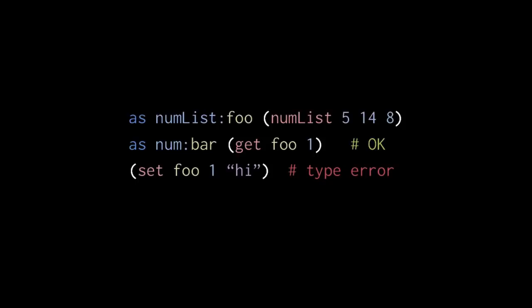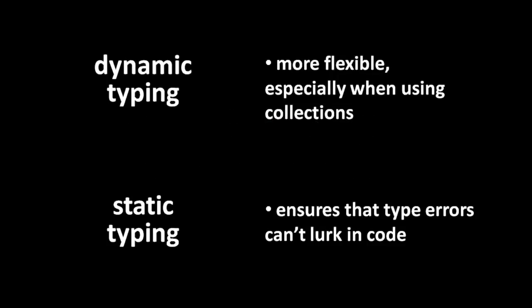Similarly, requiring each function to have just one type of returned value can be quite restrictive, as is requiring each parameter to have just one type of accepted value. Static typing allows all of our type errors to be detected reliably without running our code, meaning type errors won't lurk hidden in our code as can happen with dynamic typing. Whether eliminating this one class of bugs is worth the restrictions of static typing is one of the never-ending debates among programmers.